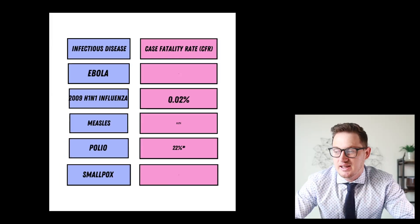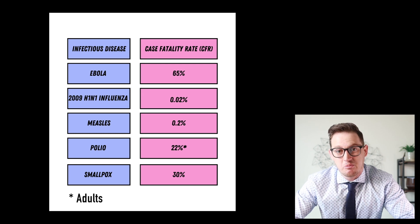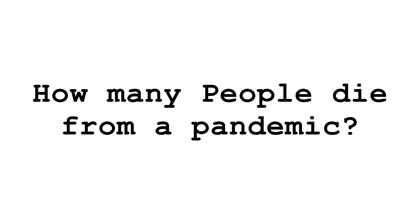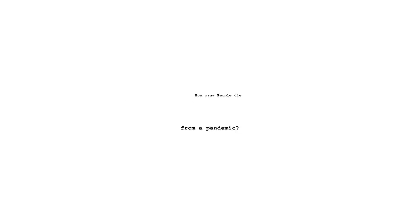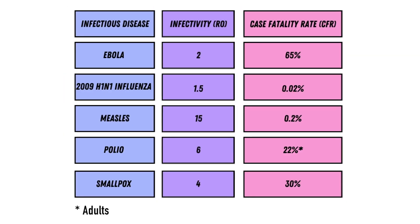Getting back to our table, you can see that these diseases have a wide range of estimated case fatality rates, from less than 1% to over 60%. So if you want to know how many people will actually die from a pandemic, you need to understand both infectivity and case fatality rate because they both contribute — and no, they don't always go together.